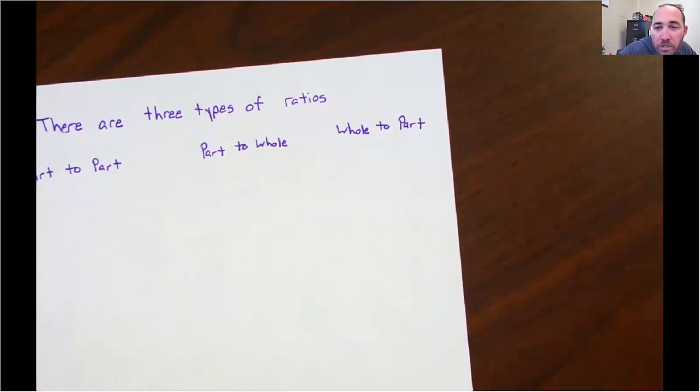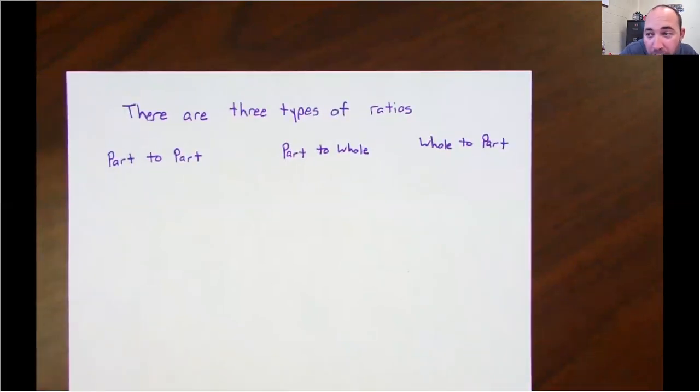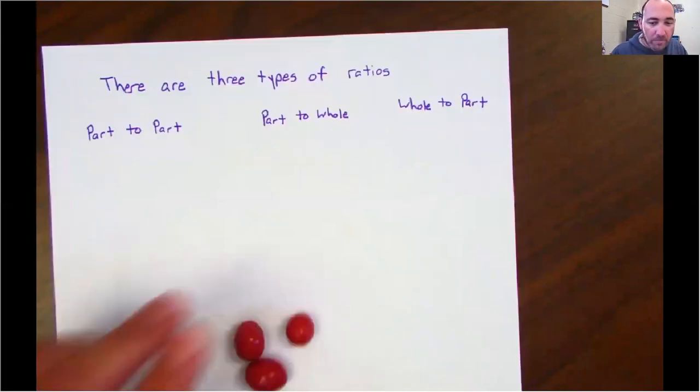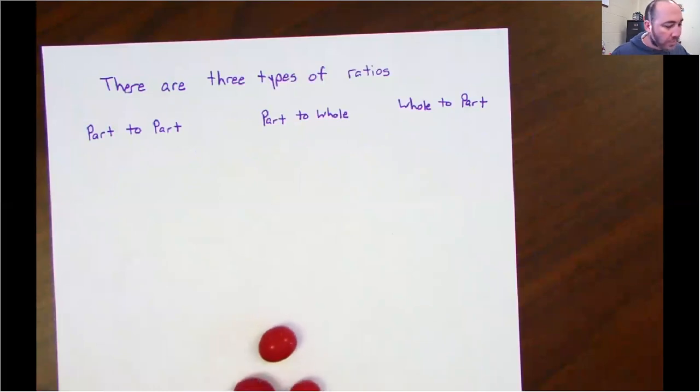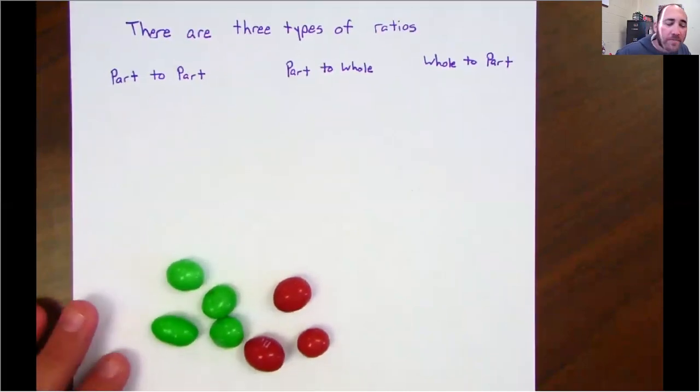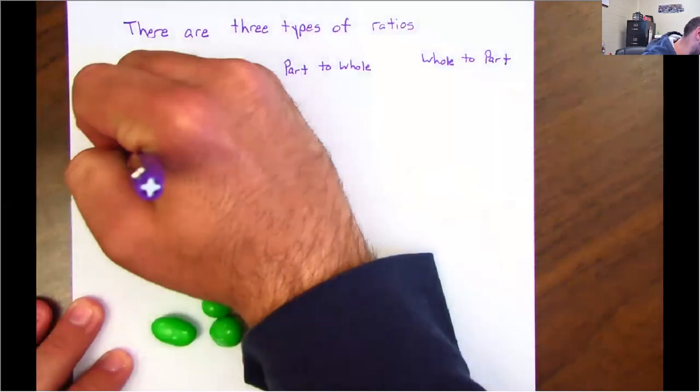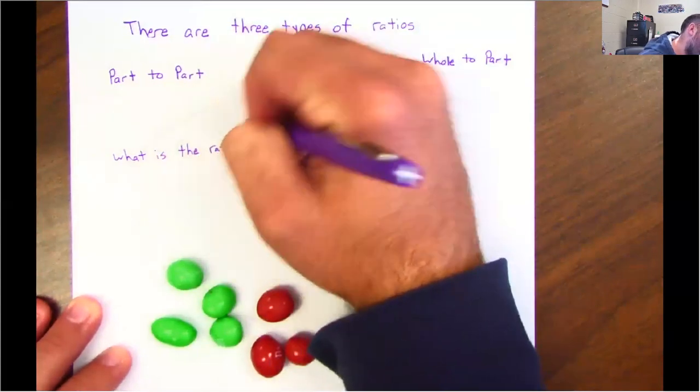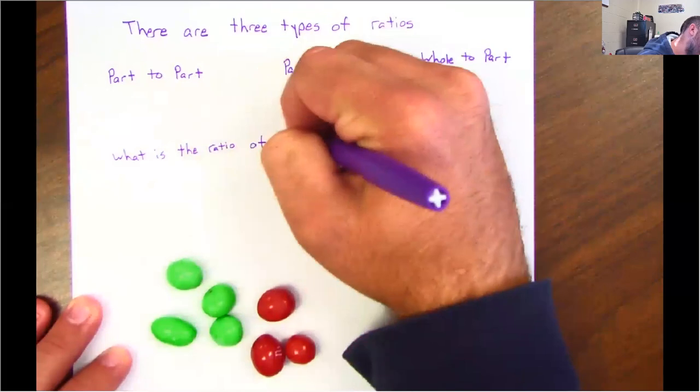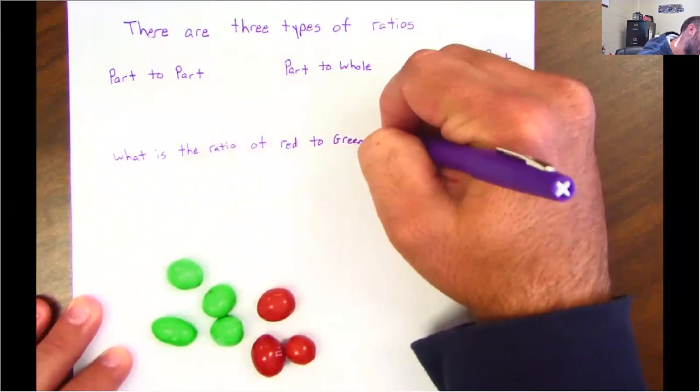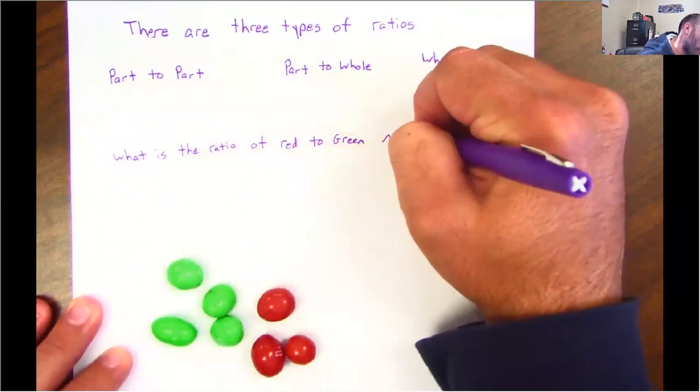So again, three types of ratios. There are three types of ratios as well. We have part to part, part to whole, and whole to part. So let's go with red M&Ms and green M&Ms. Now remember, the order matters. So what happens if I say, what is the ratio of red to green M&Ms?